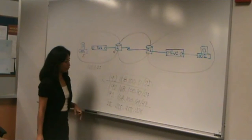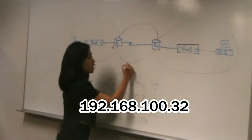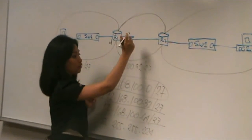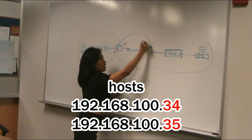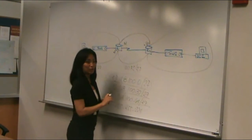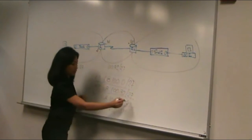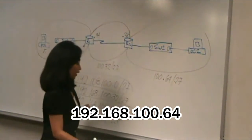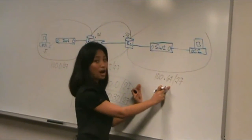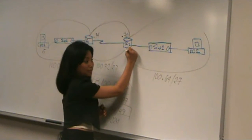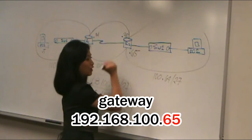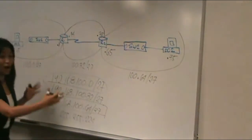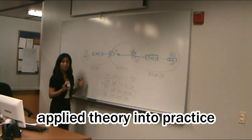This is our first network, so we can use the first network address, which is 100.0 /27. The default gateway is the next number to the network address, which is .1 — we can use it for this interface. For this host, we can use .5. For our second network, we can use the second address, 100.32 /27, and we have two hosts here — we can use .34 and .35. For our last network, we can use 100.64 /27. Our default gateway is .65 on this interface. And for the host, we can use .75.